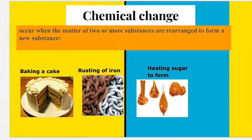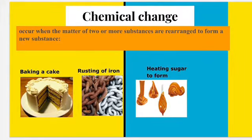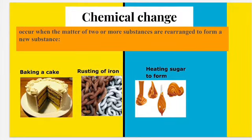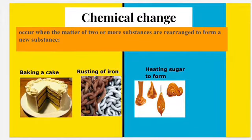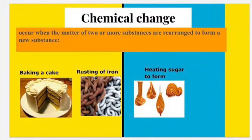A chemical change occurs when the matter of two or more substances are rearranged to form a new substance. In a chemical change, a chemical reaction happens, and that reaction either releases or absorbs heat or other energy. Sometimes they may form a gas, an odor, and the color might be different. A great way to remember this is roasting a marshmallow. When you roast a marshmallow, the outside becomes brown, and that crispy substance on the outside is evidence that a chemical change has taken place.